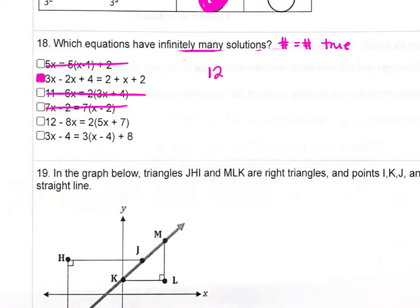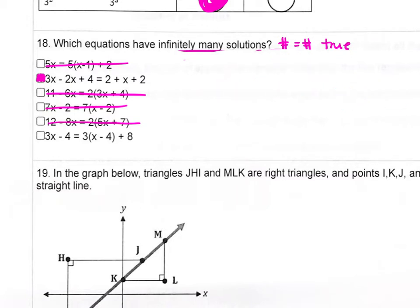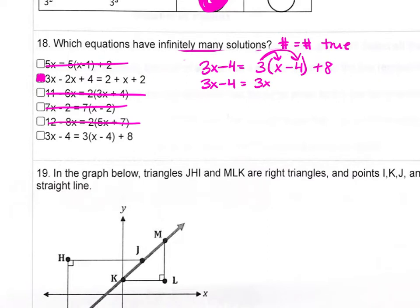Next problem: 12 minus 8x equals 2 times (5x plus 7). We distribute the right side and notice a different x term on each side, so this will be one solution. We cross that one off. The last one: 3x minus 4 equals 3 times (x minus 4) plus 8. On the right side, 3 times x is 3x, 3 times negative 4 is negative 12 plus 8, which is negative 4. The left and right sides are the same — 3x minus 4 — so it has infinitely many solutions.